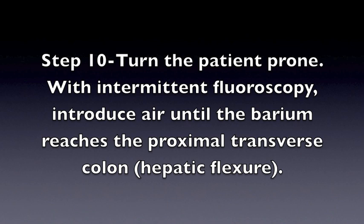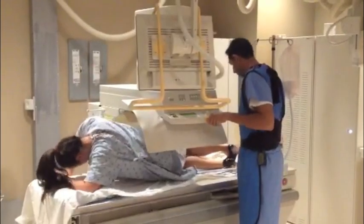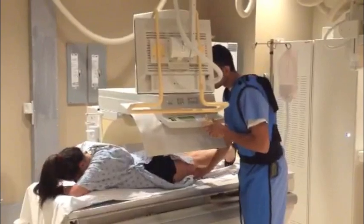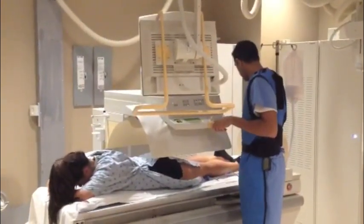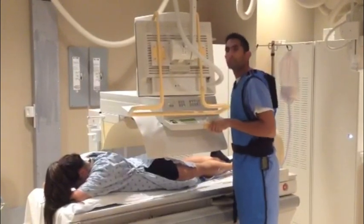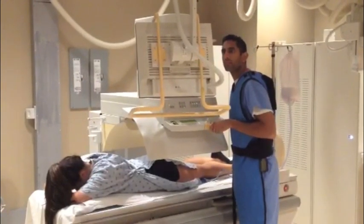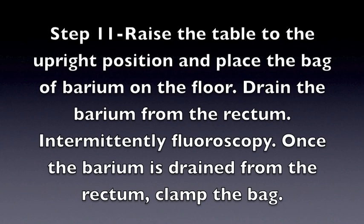Step 10: Turn the patient prone. With intermittent fluoroscopy, introduce air until the barium reaches the proximal transverse colon and hepatic flexure. Step 11: Raise the table to the upright position and place the bag of barium on the floor. Drain the barium from the rectum with intermittent fluoroscopy. Once the barium is drained from the rectum, clamp the bag.